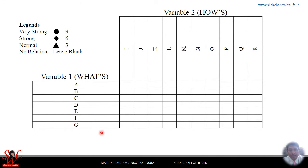So here it is — as you see here, a diagram which is the intersection of some columns and rows. There are two kinds of variables. Variable 1 is shown here in rows, say A, B, C, D, E, F, G. You can say that Variable 1 represents the customer expectations.